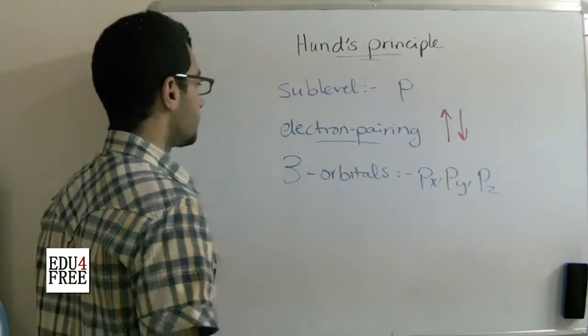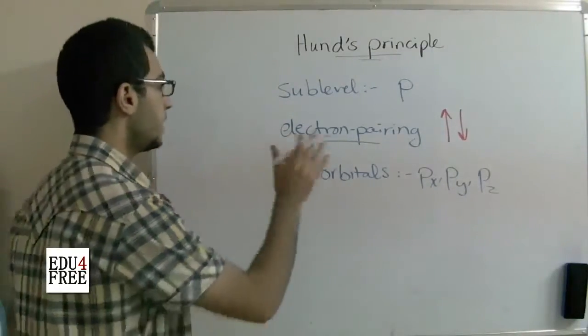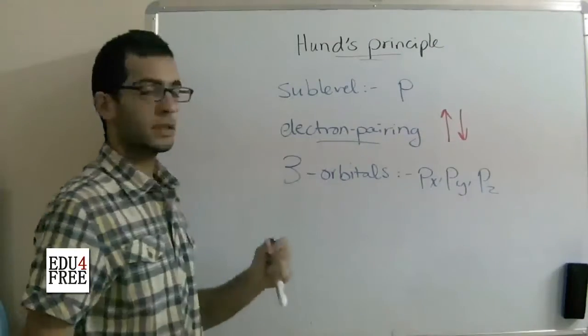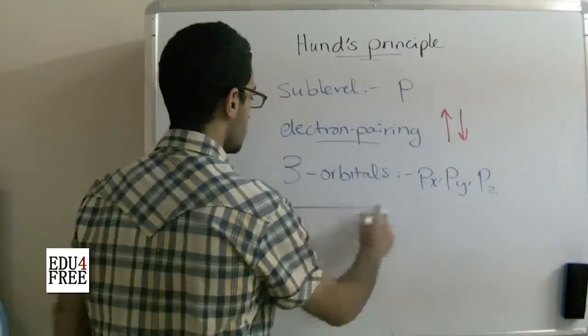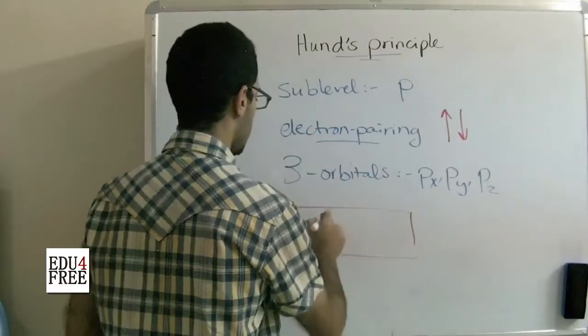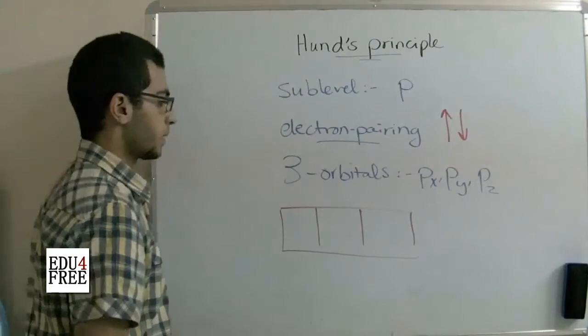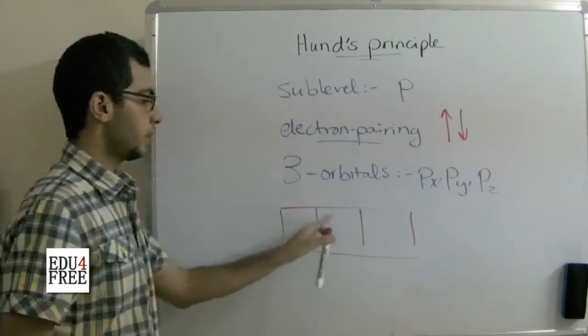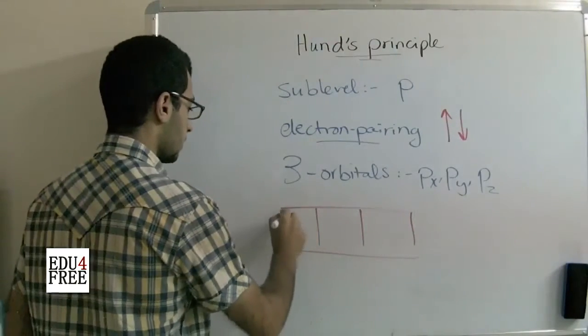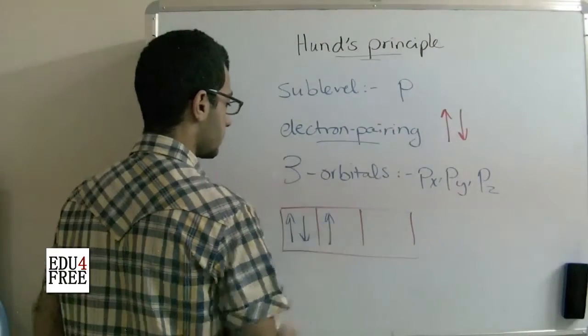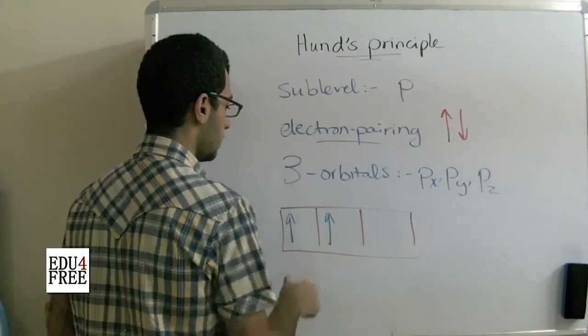So for example, if there is an atom and the P sublevel contains three electrons, we have three orbitals. How will the electrons be arranged? Would they be like that? Or like that?